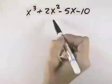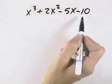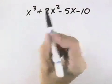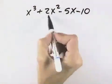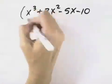We want to completely factor this polynomial. There is no greatest common factor, so we count the number of terms. Because there are four terms, that means we need to try grouping.